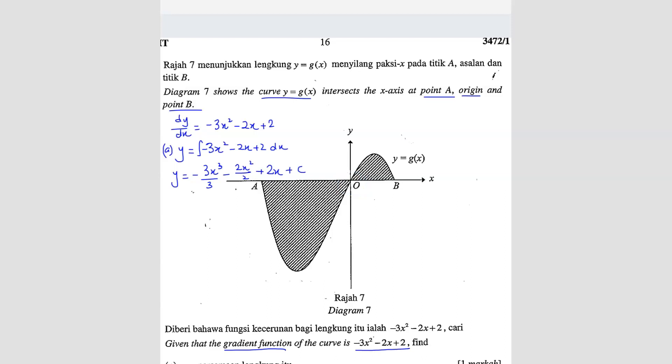Since the curve passes through the origin, we can substitute the origin. So 0, 0. When you substitute 0, 0 into x and y, you will get your C value equals to 0 as well. So that means the equation of the curve is negative x cube minus x square plus 2x. This is the equation of the curve.